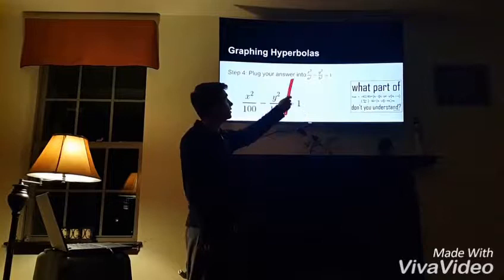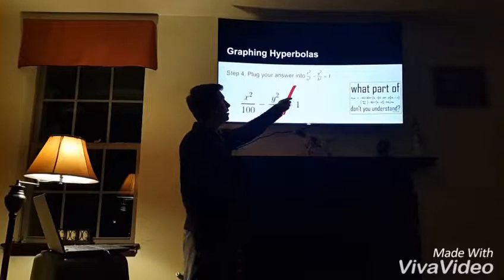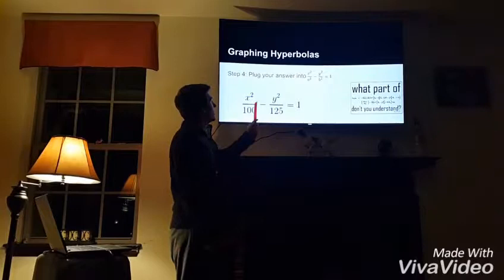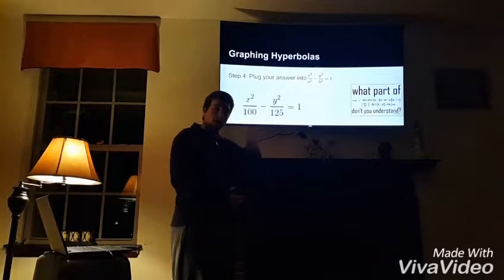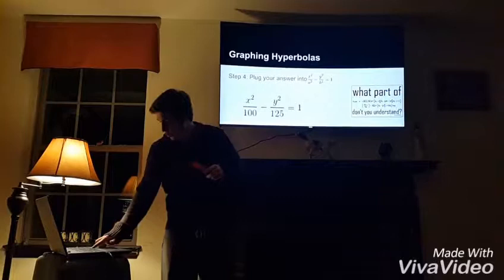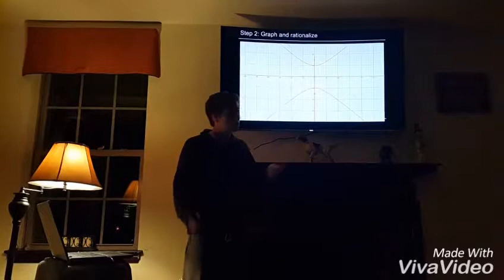Step 4 is to plug your answers into x squared over a squared minus y squared over b squared equals 1. Remember, a is 10, so a squared is 100. So the equation becomes x squared over 100 minus y squared over 125 equals 1. That is your final equation. You can plug it into Desmos and that gives you the curve of your hyperbola.